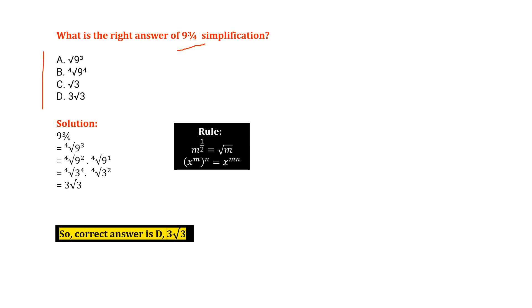So we can write down 9 power 3 by 4 as 4th root 9 power 3, because we know if we have root, we can write down this one as my power house.